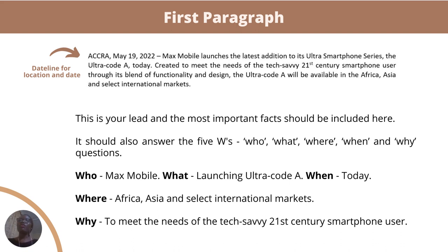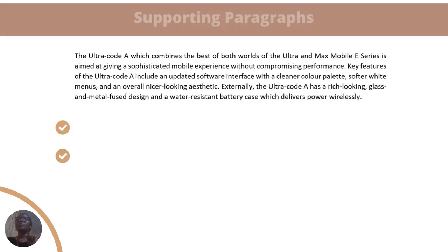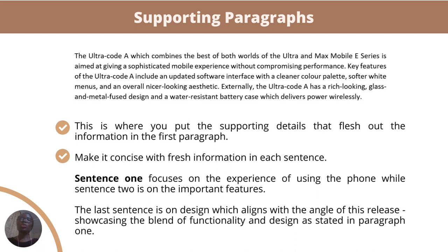Your first paragraph is your lead — remember the inverted pyramid structure. Let's break down the W's: Who — Max Mobile. What — launching the Ultra Code A. When — today. Where — Africa, Asia, and select international markets. Why — to meet the needs of the tech-savvy 21st century smartphone user. Whether you're doing an event, conference, or product launch, answer who, what, when, where, and why in your first paragraph, because that's what makes people continue reading.